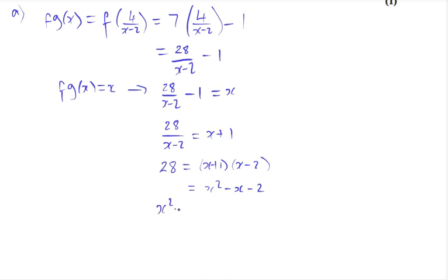Move the 28 across to the other side, which gives x squared minus x minus 30 equals 0. Factorize the quadratic equation which would be x minus 6 and x plus 5 equals 0. And this gives us the two solutions of x equals 6 or x equals minus 5.